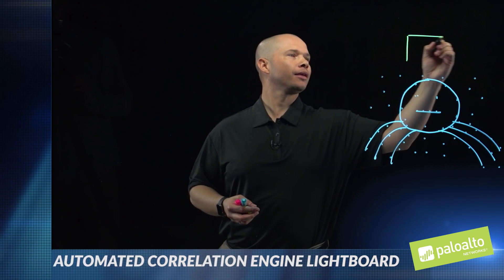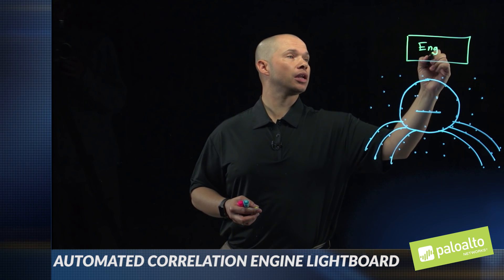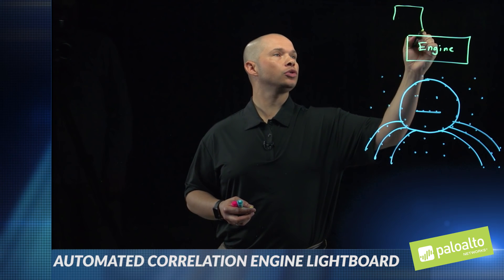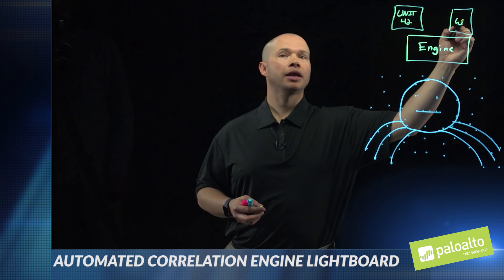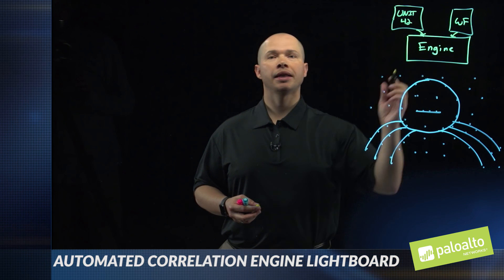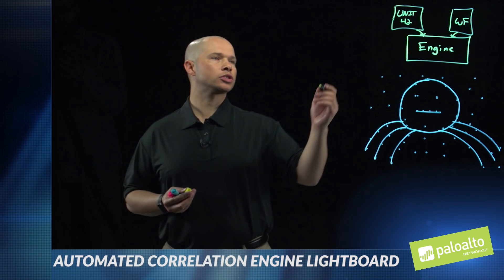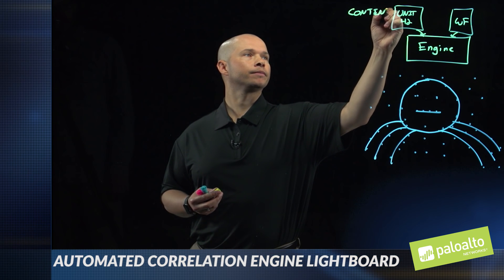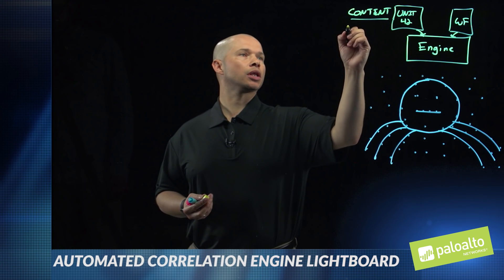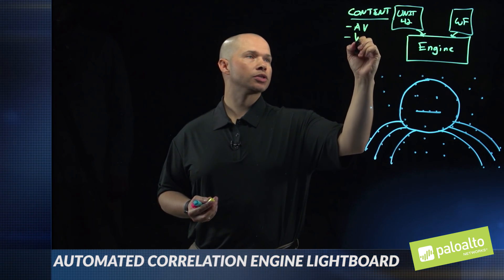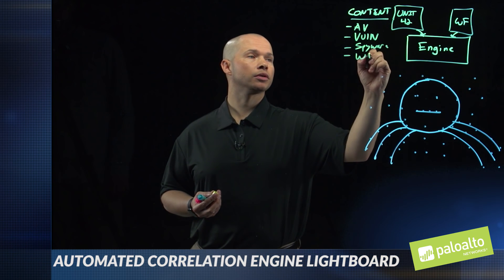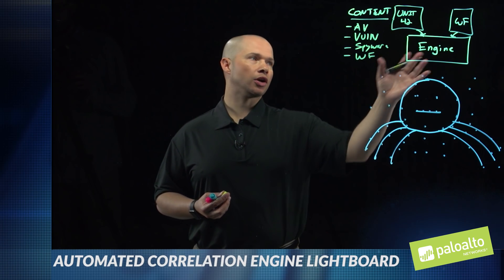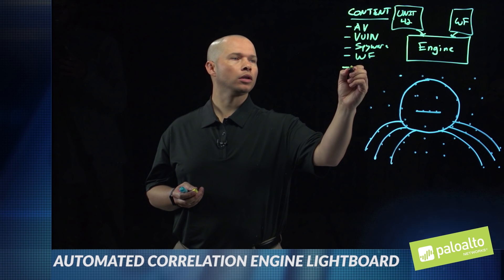The Correlation Engine is basically a set of logic that is fed by two different sources: Unit 42 and WildFire. It's important to mention how those feed in and how that actually works. We have something that we call content. When we talk about our content, we talk about things like our AV updates, our vulnerability signatures, our spyware or C2 signatures, including our WildFire signatures. These new correlation objects that are fed into our correlation engine are part of our content feed. We now have a new type of content that we call a correlation object.